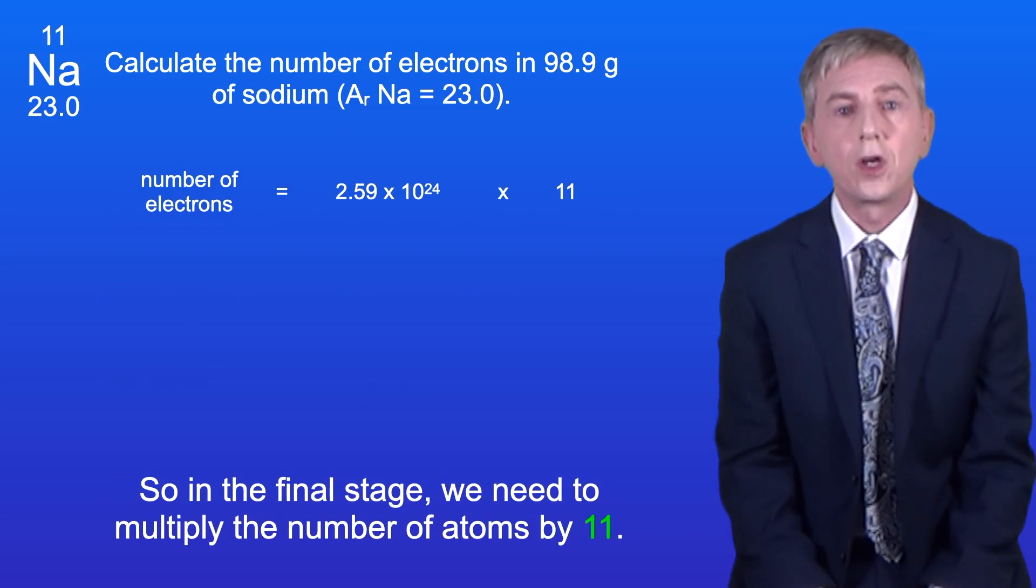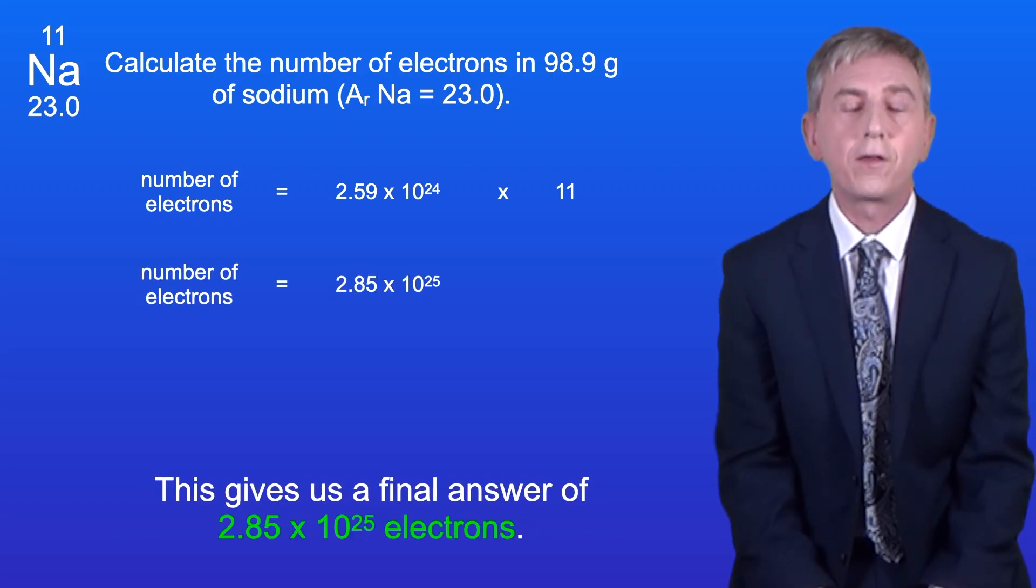So in the final stage we need to multiply the number of atoms by 11. And this gives us a final answer of 2.85 times 10 to the power of 25 electrons.